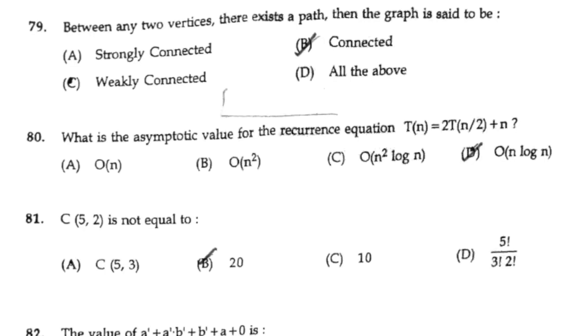If between any two vertices there exists a path, then the graph is said to be connected.